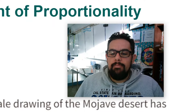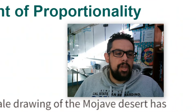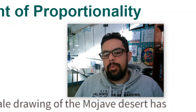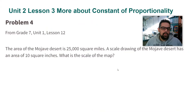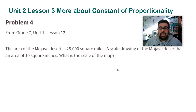All right, ladies and gentlemen, Mr. Uruthi here, and I'm going over unit two, lesson three, practice problem number four. The area of the Mojave Desert is 25,000 square miles. A scale drawing of the map of the Mojave Desert has an area of 10 square inches. What is the scale of the map?